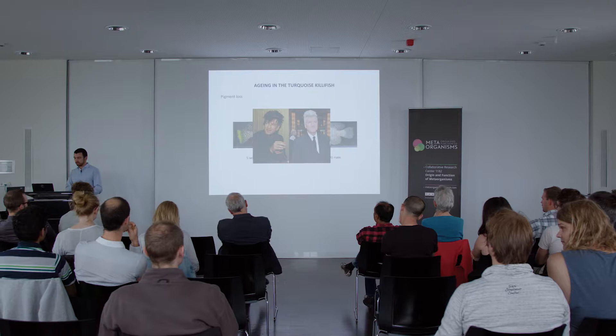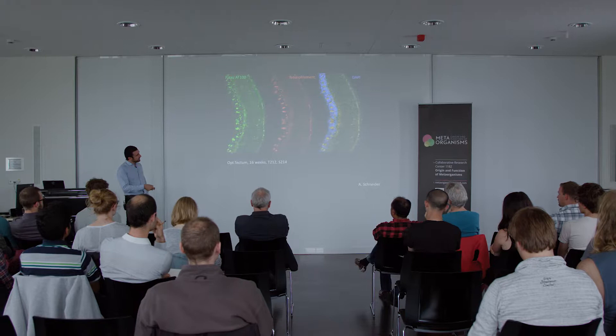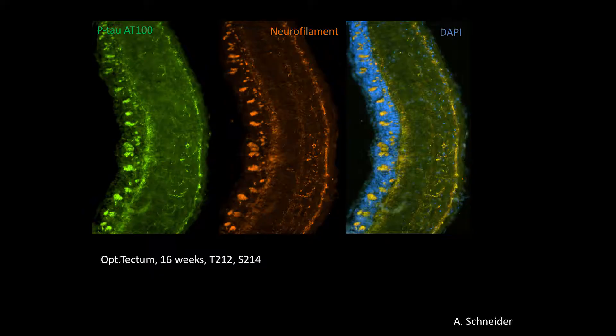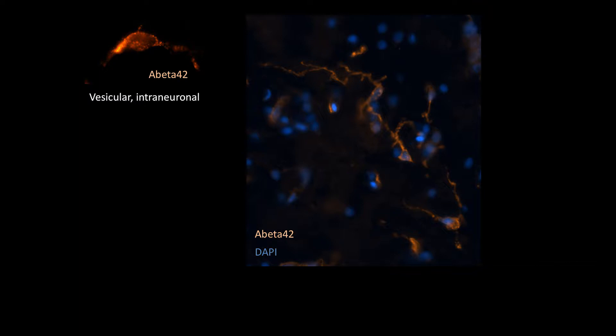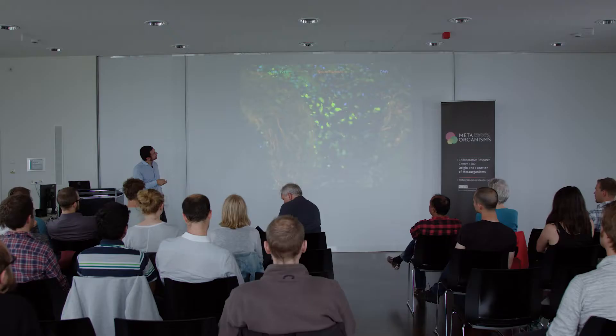Together with Agnes Schneider at the DZNE, we've looked at biomarkers in the brain of the killifish. We see accumulation of phospho-tau, which is a very important marker for some neurodegenerative diseases. Amyloid-beta 42 accumulates intraneuronally with aging in killifish spontaneously — this is a sporadic event, not induced by genetic mutations or environmental interventions. This shows phospho-tau, neurofilament, and DAPI staining, which accumulates phospho-tau with age.